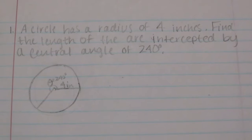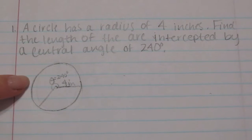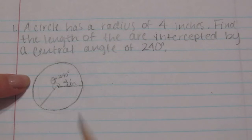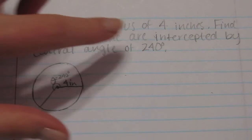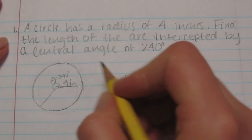So what I did first was I drew a picture and that always helps. I just drew a circle, with a radius of 4 inches and the angle of 240 degrees. So it's asking for the arc length which we know is s.